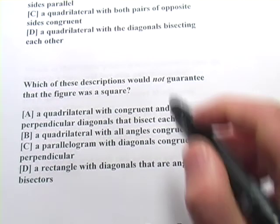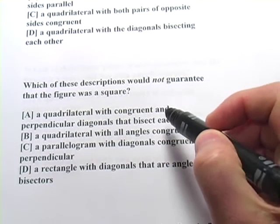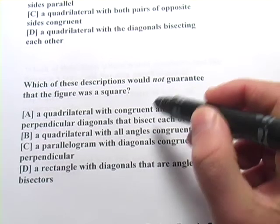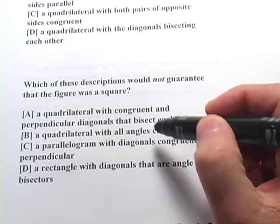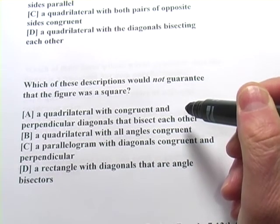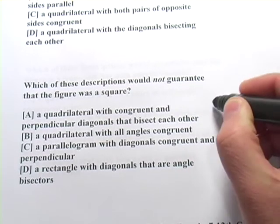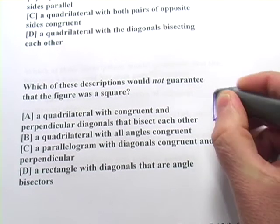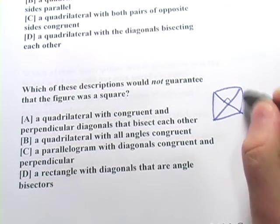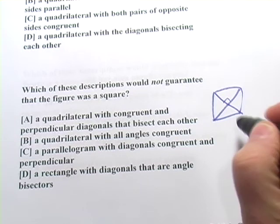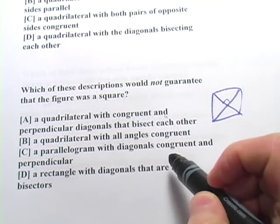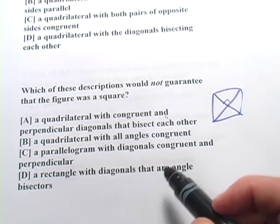This one says, which of these descriptions would not guarantee the figure was a square? So, three of them are definitely going to be squares. One of them, not. So, A says, a quadrilateral with congruent and perpendicular diagonals that bisect each other. So, you have some kind of quadrilateral, and the diagonals are perpendicular. They cut each other exactly in half, and they're the same length. That's going to happen in a square. So, this one looks like it fits with a square, so it's not the one we're looking for.